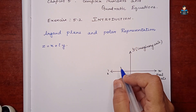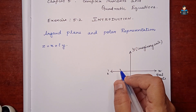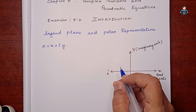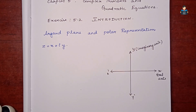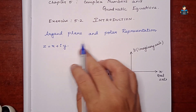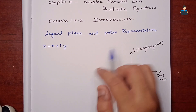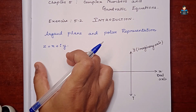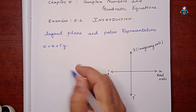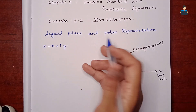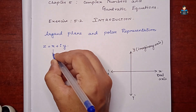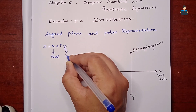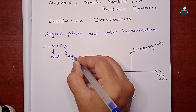Hello everyone, welcome to our channel. In this video, Chapter 5 - Complex Numbers and Quadratic Equations, Exercise 5.2 introduction. We will cover two topics: Argand plane and polar representation. A complex number is represented in the format x plus iy, where x is the real part and y is the imaginary part.